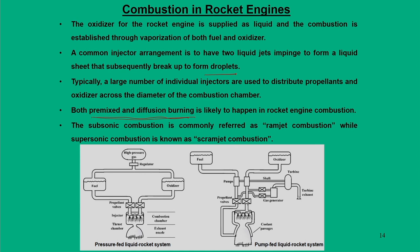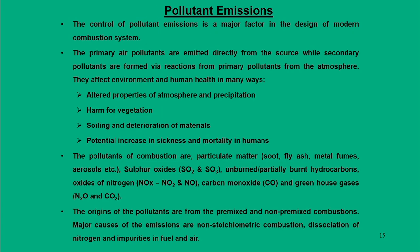The type of combustion in rocket engines involves droplet combustion, and both premixed and diffusion burning can occur. Subsonic combustion is referred to as ramjet combustion and supersonic combustion as scramjet combustion. These are different terminologies used in rocket engine contexts.